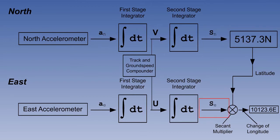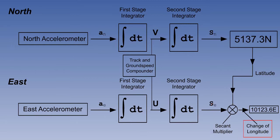The northerly distance gone is simply added to the initial position to generate a new latitude. However, the easterly distance gone has to be converted to change of longitude. We need an input of latitude — fortunately, we already have it. It is the current latitude part of present position in the display. The latitude is therefore passed to a secant multiplier, which converts it to change of longitude, which is added to the initial position to generate a new longitude.